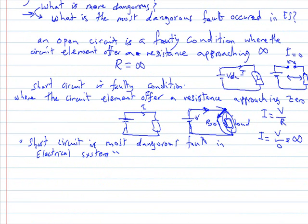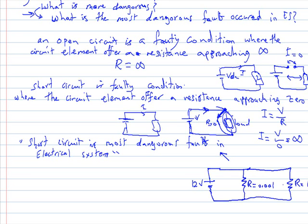I want to give an example. It's not a part of the answer, it's an analytical example that illustrates this issue. If we have an electrical source, let's say a battery with 12 volts. Here we have a resistance equal to 0.001, and here we have a resistance equal to 10 ohms. What is the current in resistance 1 and what is the current in resistance 2?